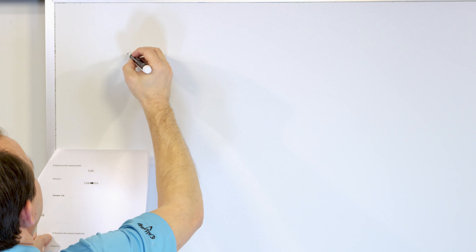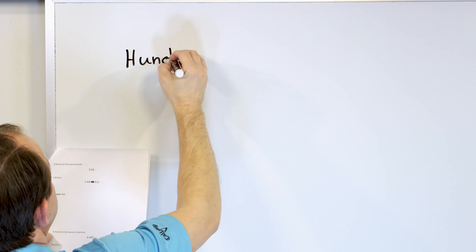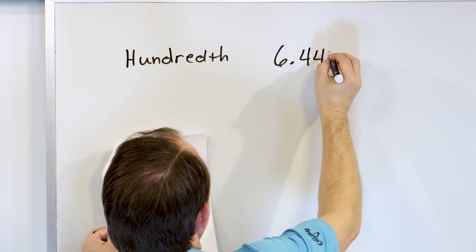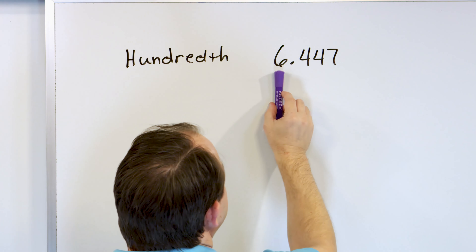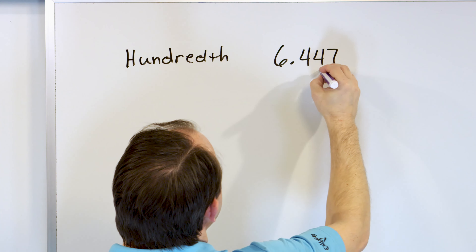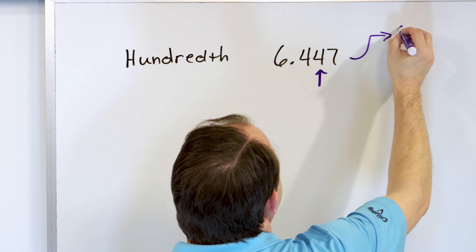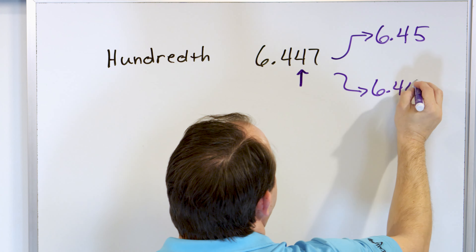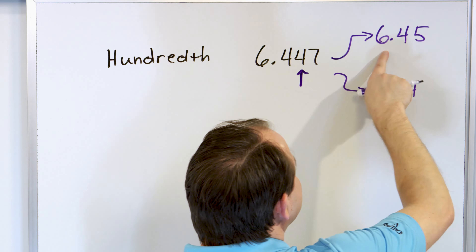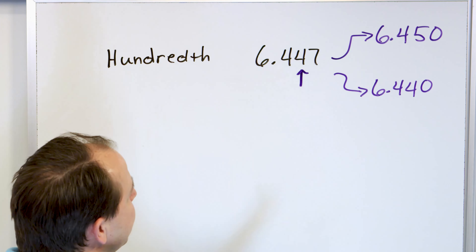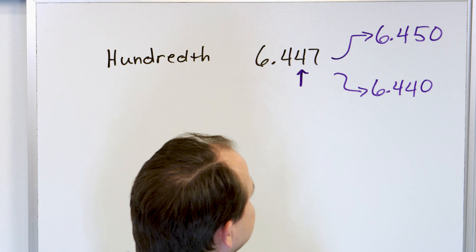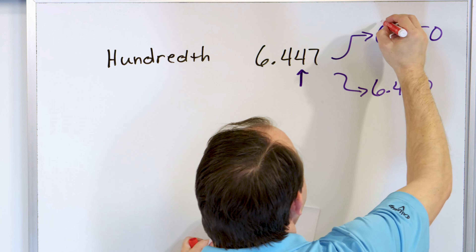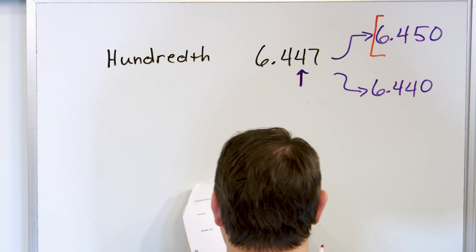Let's round to the nearest hundredth. The number is six point four four seven. The first step is to find the hundredths position: here's the whole number, here's the tenths, and here's the hundredths — put a little arrow there. We can either go up to six point four five or stay down at six point four four. We look at the next-door digit, which is a seven — larger than five — so the answer is six point four five.